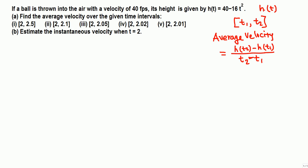When we have a height function h(t), then the average velocity over the interval T1 to T2 is given by difference in heights divided by difference in time—rise over run.